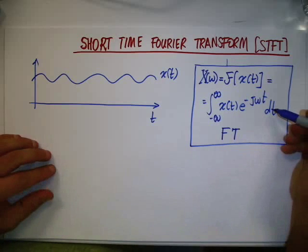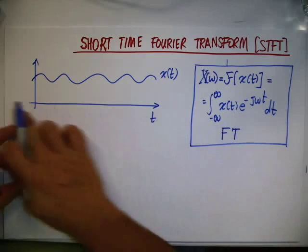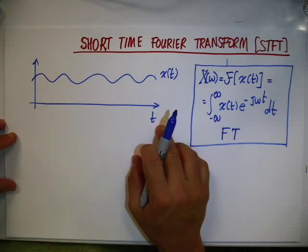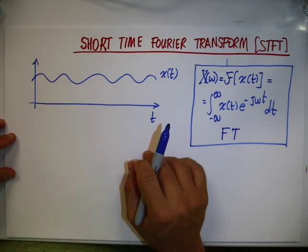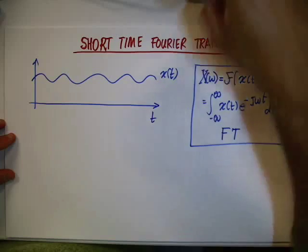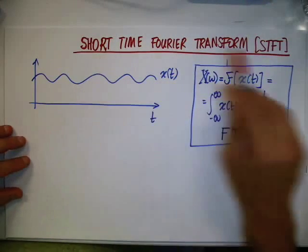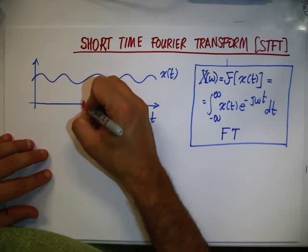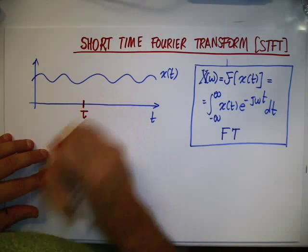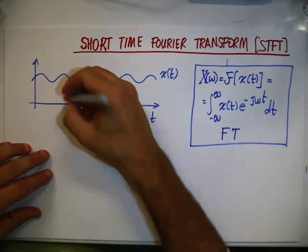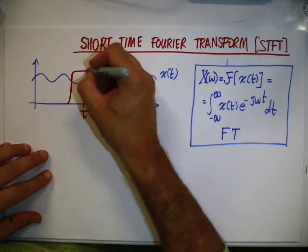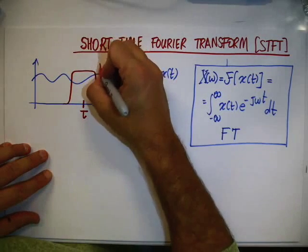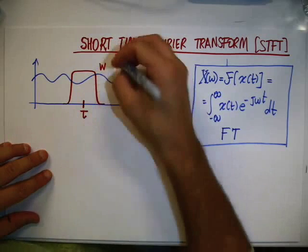The integration in time is done over the entire real axis. Instead, when we talk about the short-time Fourier transform, we fix a time tau, and we consider a window shifted at tau.